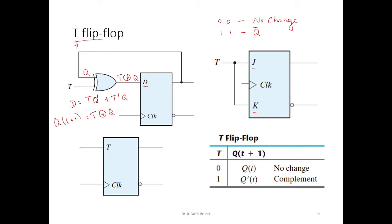And this is the graphical symbol. It has one input T and a clock input. This is Q and this is Q bar and this is the characteristic table. At time T, when we supply 0, we observe Q(t) that is no change and when we supply 1, we observe complement. So this is easily understandable when we use the JK flip-flop.